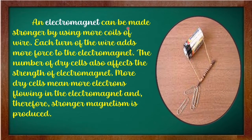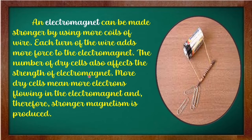An electromagnet can be made stronger by using more coils of wire. Each turn of the wire adds more force to the electromagnet. The number of dry cells also affects the strength of electromagnets. More dry cells means more electrons flowing in the electromagnet and therefore, stronger magnetism is produced.